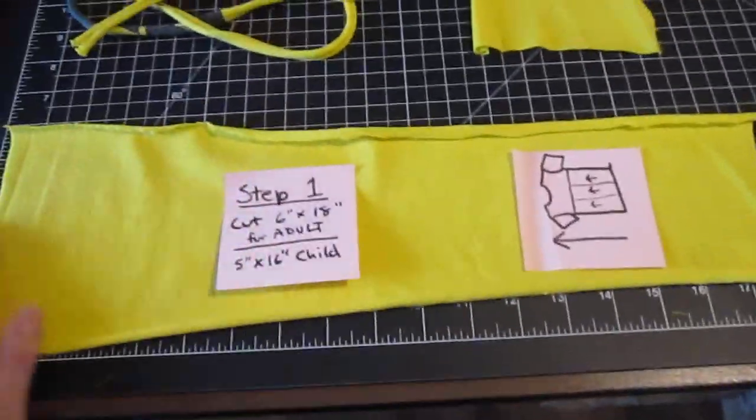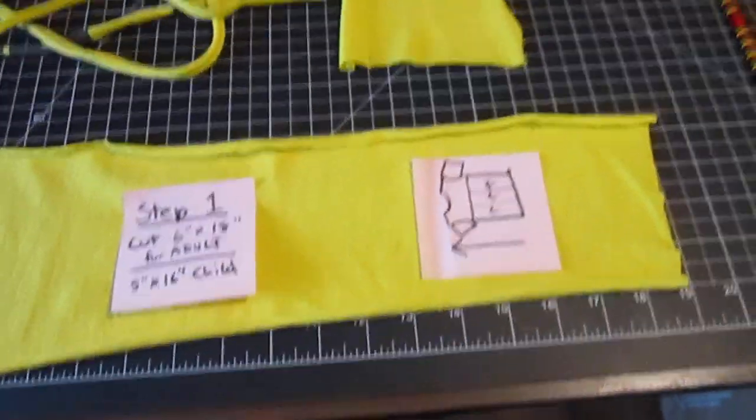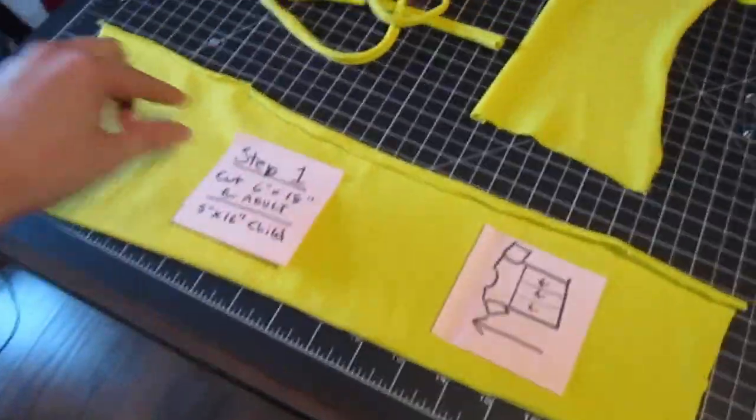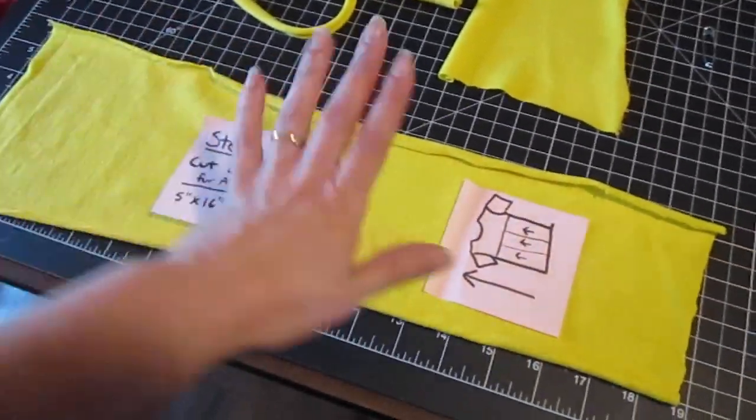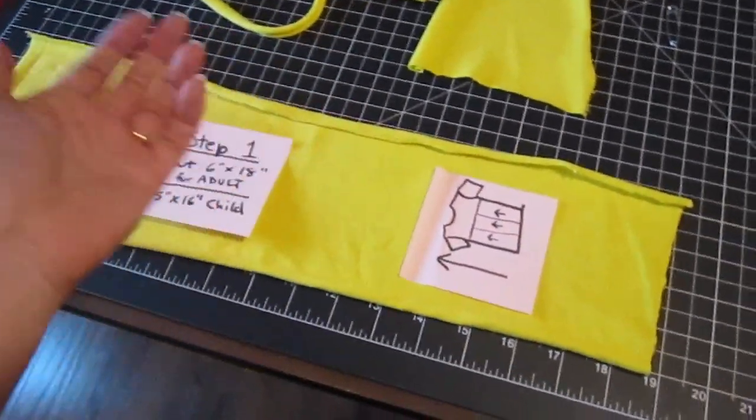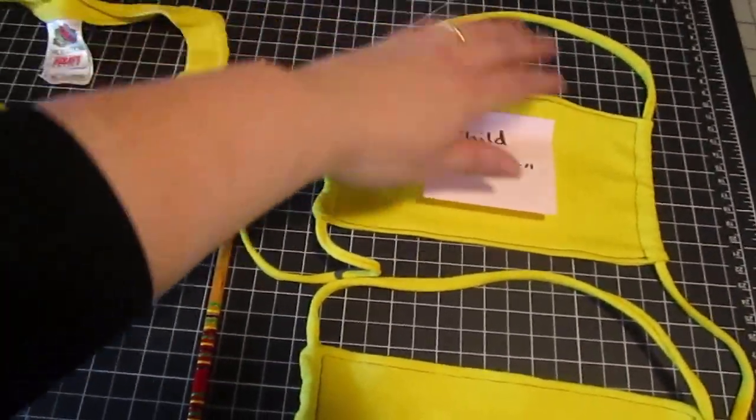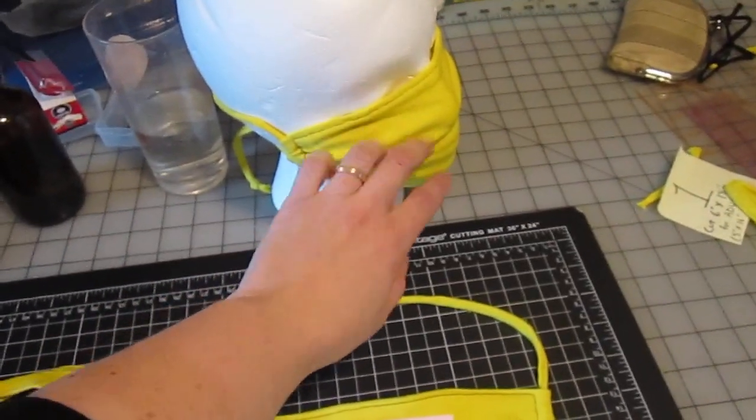Step one is you want to cut your fabric. For the t-shirt, you really want to cut it with the long way of this fabric going up the t-shirt. I tried it the other direction and it works fine enough. This is the other direction and it kind of made the top a little bit wonky and didn't quite fit as nicely over the front.